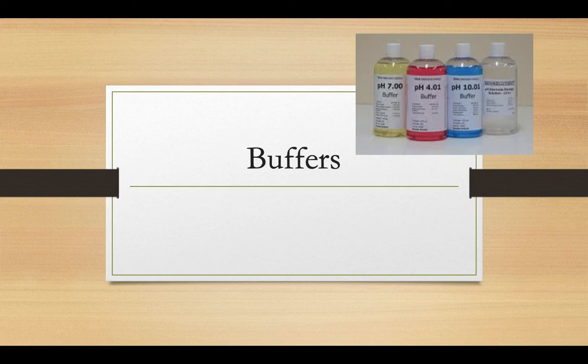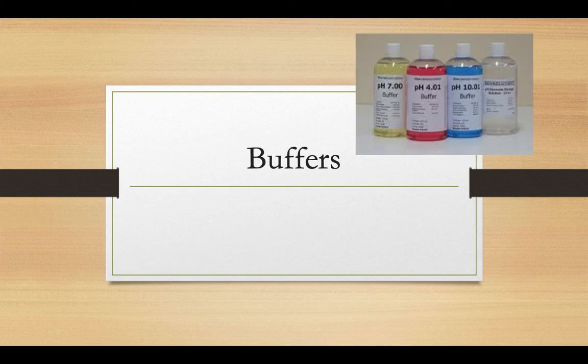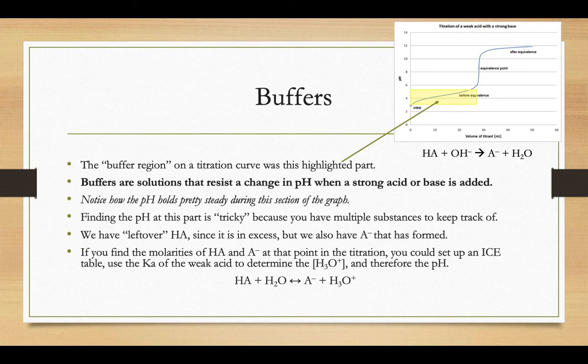Today we're going to be looking at the buffer region of a titration curve. We've been looking at the points along the curve as you titrate, what the pH would be before the titration even begins, when you're at the equivalence point, after the equivalence point, but the hardest part of a titration curve is when you're in that buffer zone, that highlighted part that you see there.